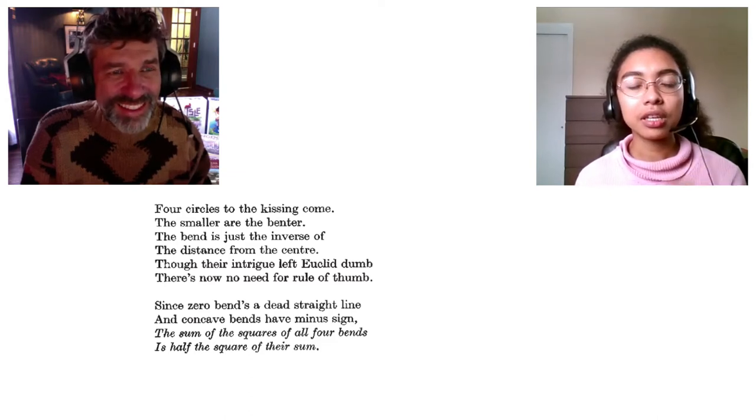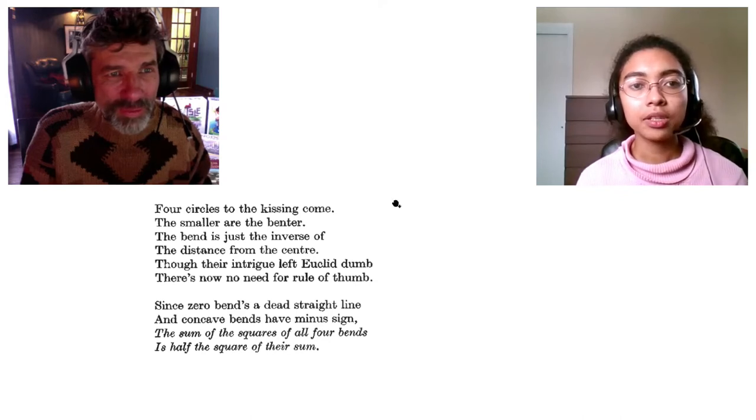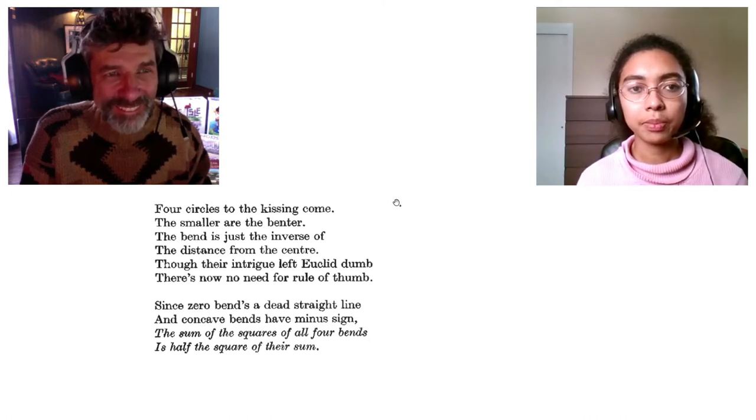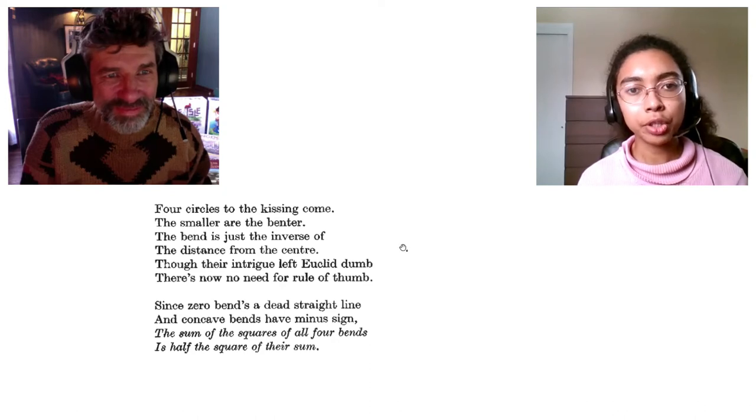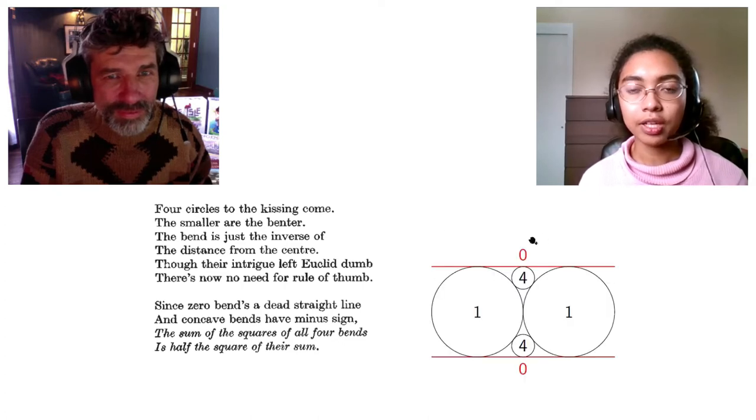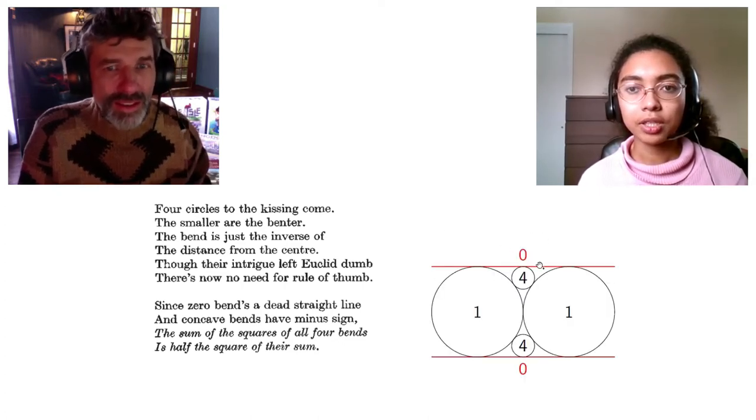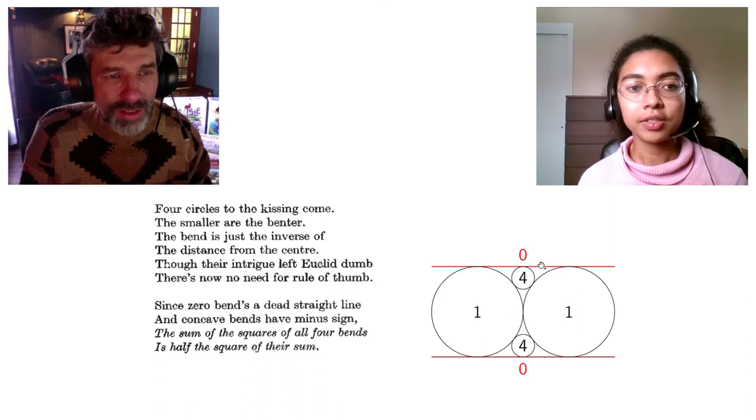These are the second and third stanzas of the poem. Four circles to the kissing come, the smaller are the benter. The bend is just the inverse of the distance from the center. So, that's pretty much saying that the bend is one over the radius. Though their intrigue left Euclid dumb, there's now no need for a rule of thumb. Since zero bends a dead straight line, so what it's saying is if you have a line, the bend of that is zero. Okay. And it also says, the next line says, and concave bends have minus sign.